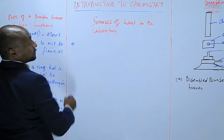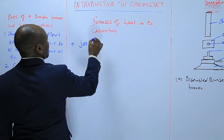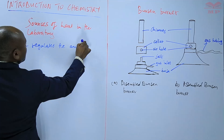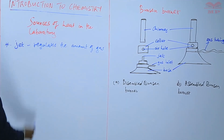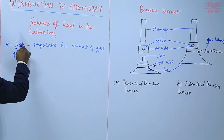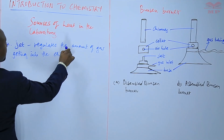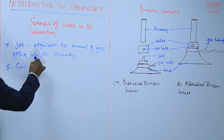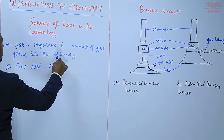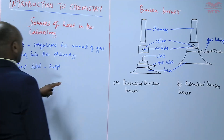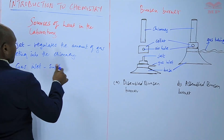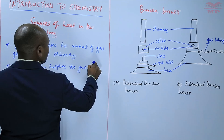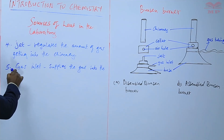We have the jet — this one regulates the amount of gas getting into the chimney. And then we have the gas inlet, which supplies the gas from the source into the Bunsen burner.